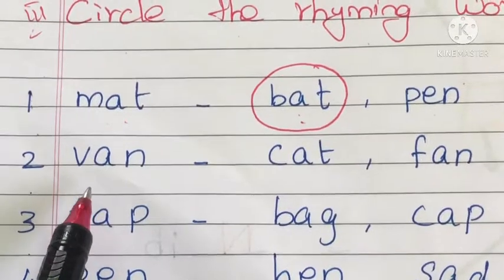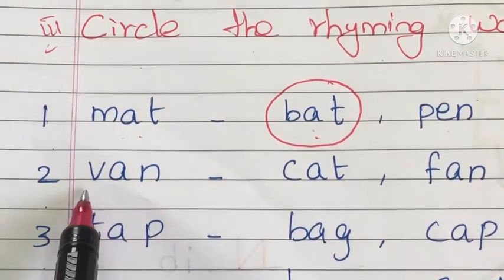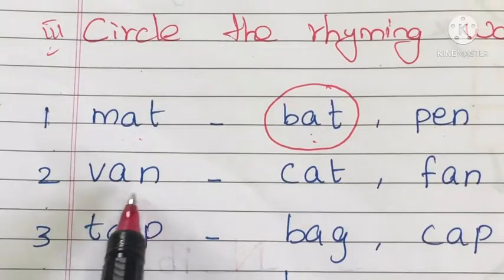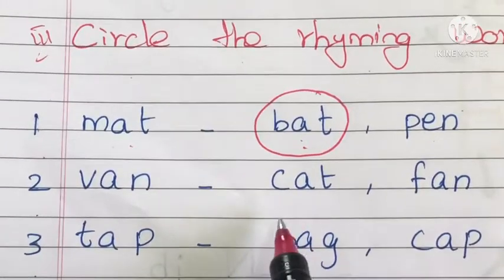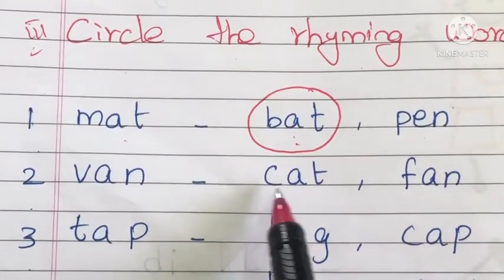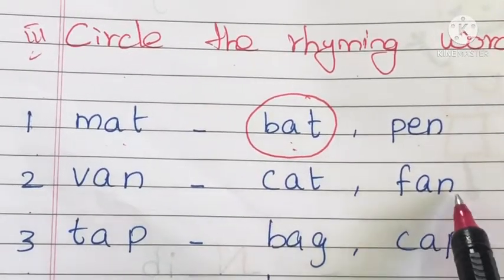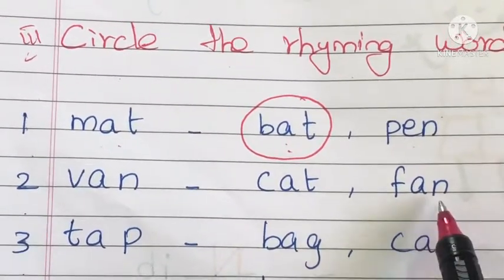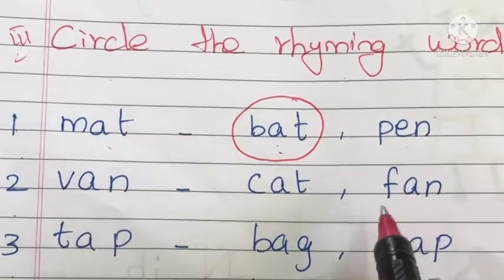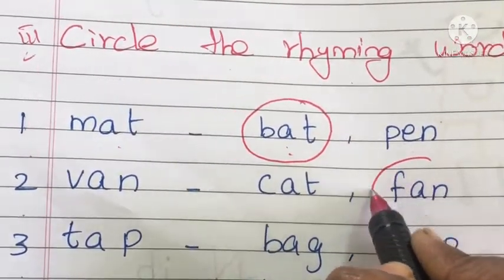See the next word: it is van. What is the rhyming word for van? The rhyming word is fan. Circle it.